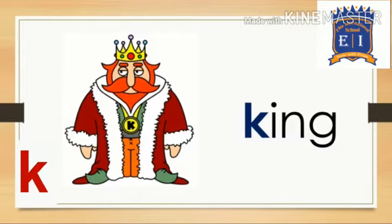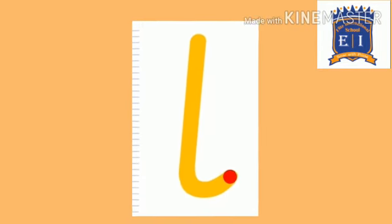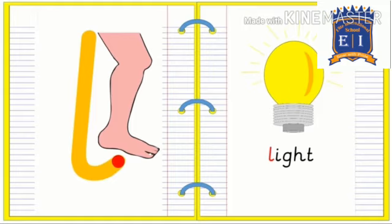K, K king. Letter is L and the sound is L. L, L light.